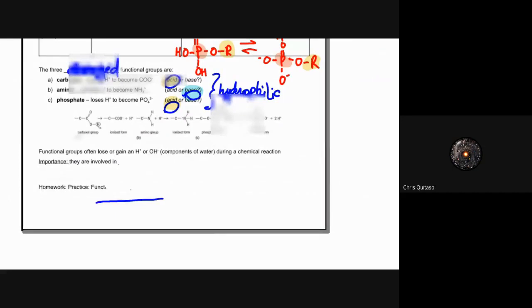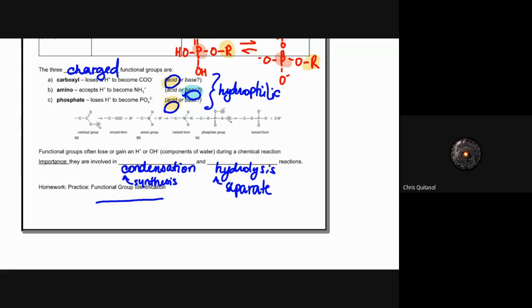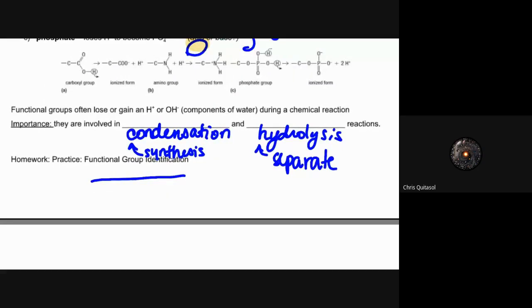The last point with regards to functional groups is that when we think about condensation or hydrolysis reactions, those functional groups are often going to be gaining or losing hydrogen or hydroxyl groups — making up the components of water. During a chemical reaction, condensation forms water and hydrolysis uses water to break things apart. Each of those reactions looks at those functional groups — specifically the hydrogen ion and hydroxyl groups — to create or use water to catalyze a reaction.